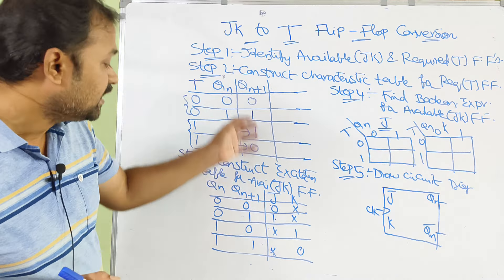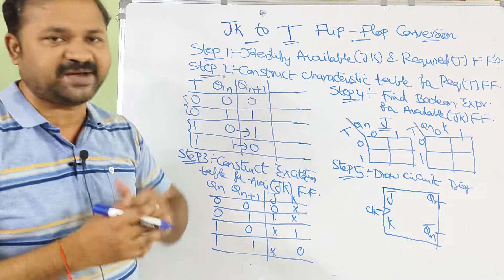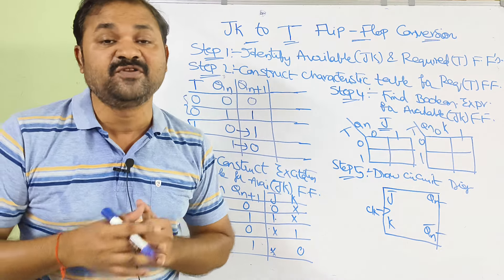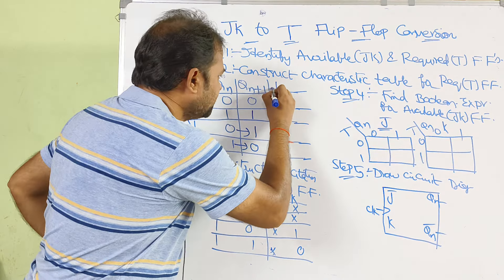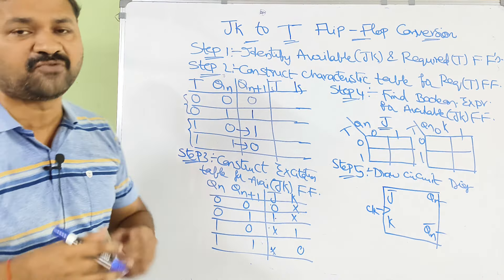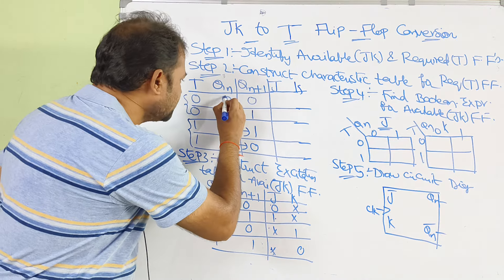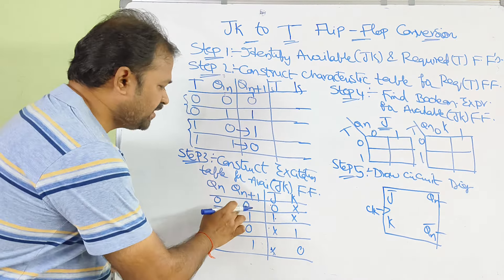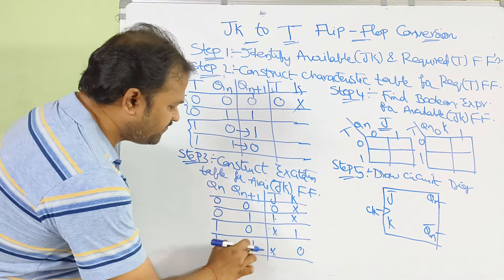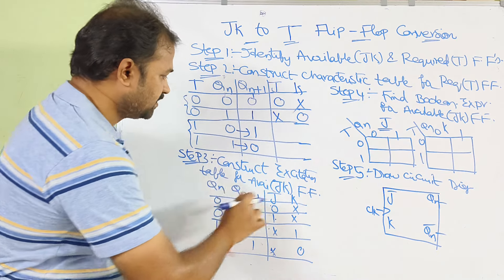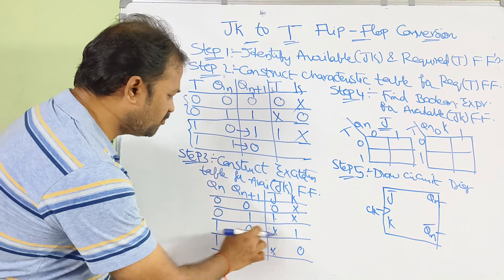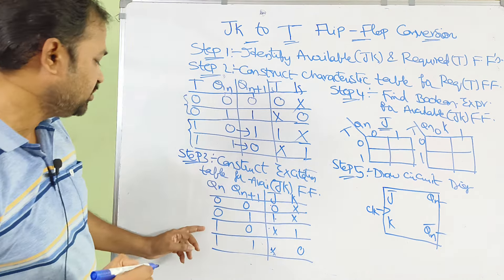According to the excitation table, we have to fill this table, because in the next step we have to find the Boolean expression for J and K of the available flip-flop. If Qn is 0 and Qn+1 is 0, then JK values are 0, don't care. If Qn is 1 and Qn+1 is 1, then don't care, 0. If Qn is 0 and Qn+1 is 1, then 1, don't care. If Qn is 1 and Qn+1 is 0, then don't care, 1.